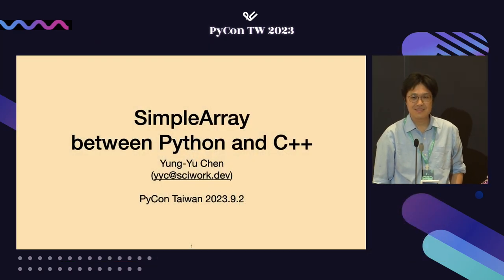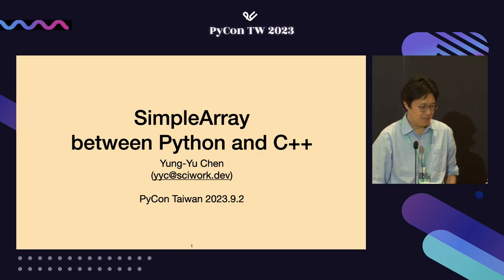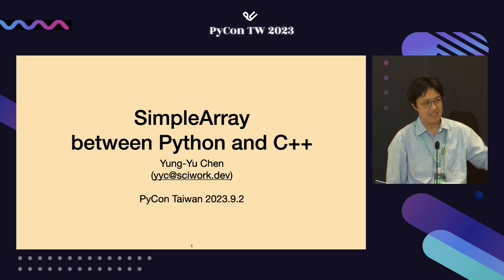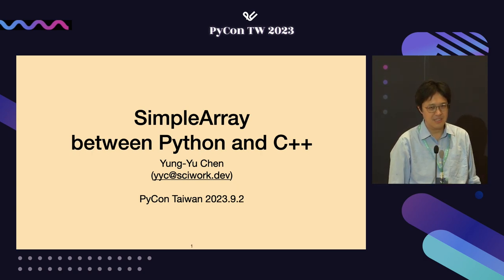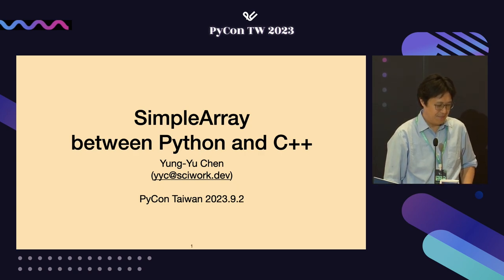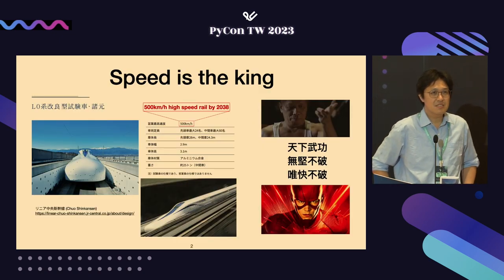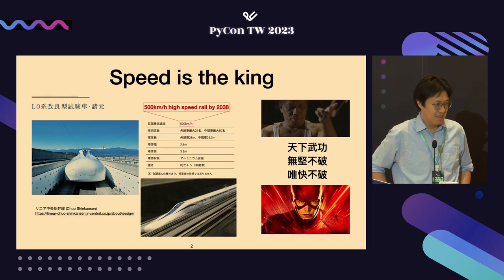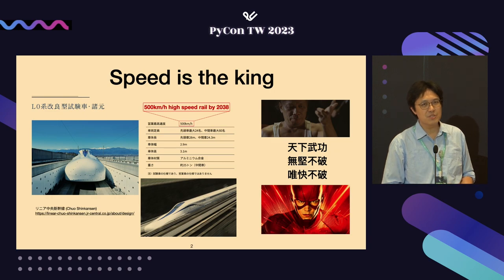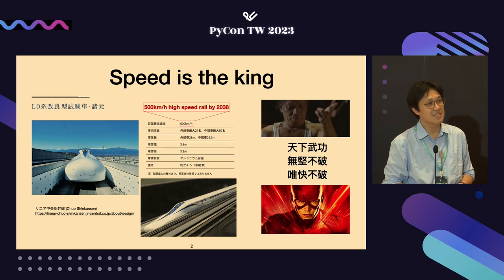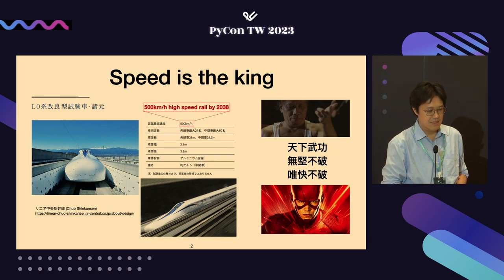Hello everyone, I'm Yongyu. Today I'm going to talk about making a simple array in C++ and connecting it to Python to make the two worlds work in harmony and to make your program run fast. This could be a rather exotic talk at PyCon. The whole notion of making an array library, writing code in C++ and connecting it back to Python, is because we want to run very fast.